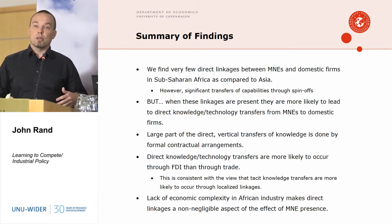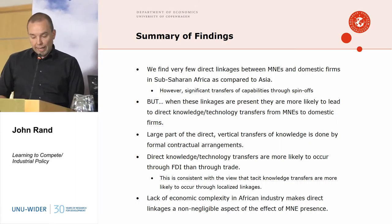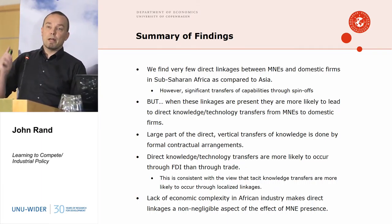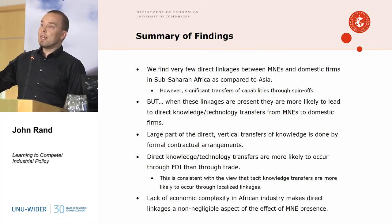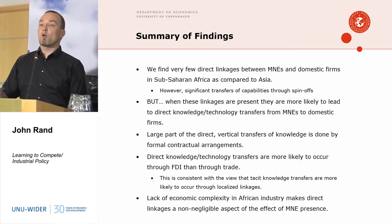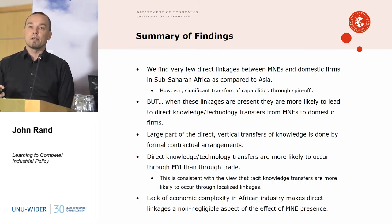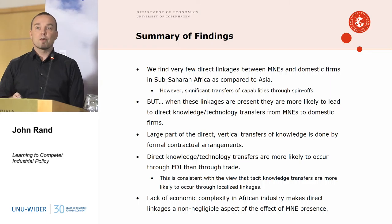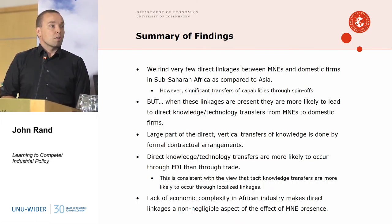A large part of the direct vertical linkages is done through formal contractual arrangements. When we see these transfers actually happening, they are stipulated in a contract — which was a big surprise, since many think of these processes as automatic. But as Arrow said in 1969, they are not automatic, and there is room for policy in this aspect.